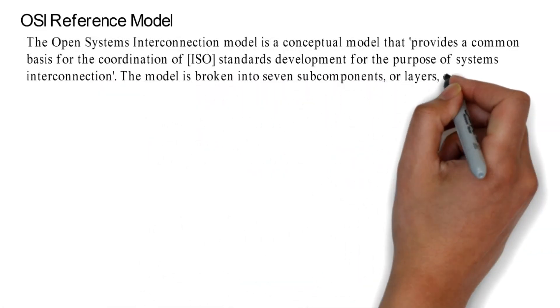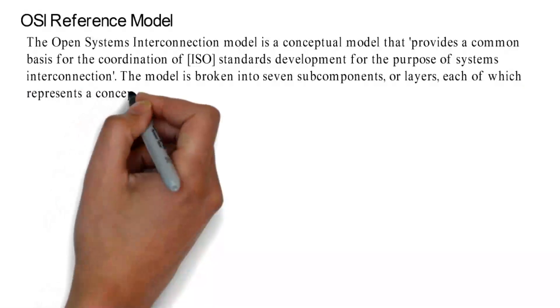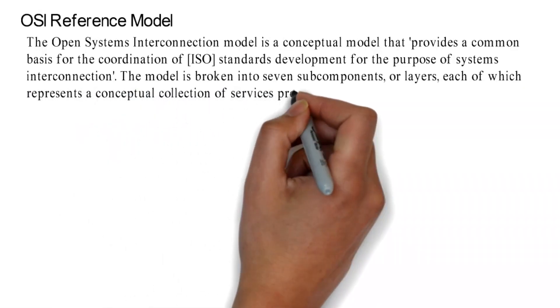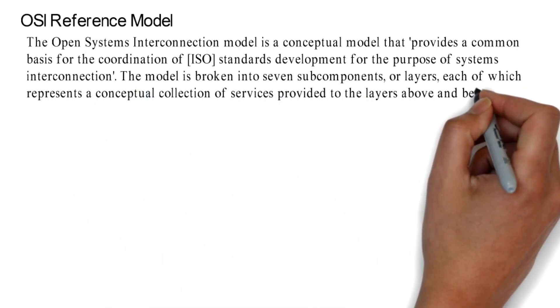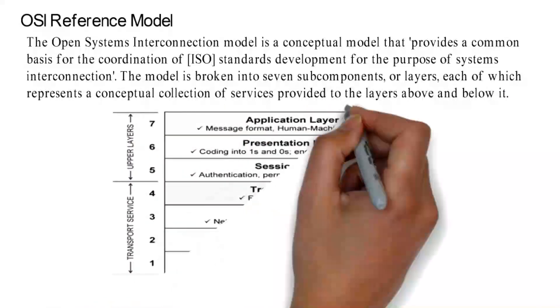The model is broken into seven subcomponents, or layers, each of which represents a conceptual collection of services provided to the layers above and below it.